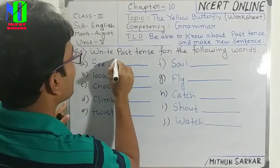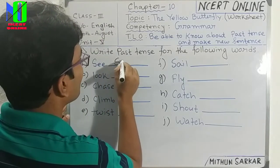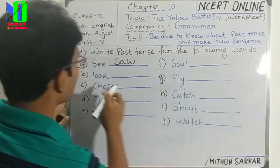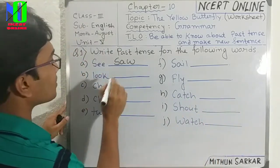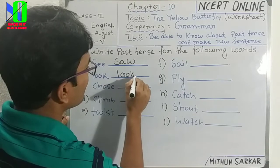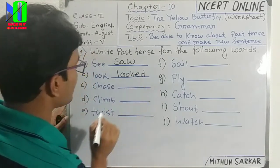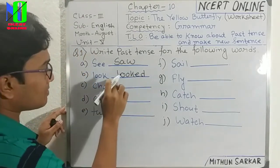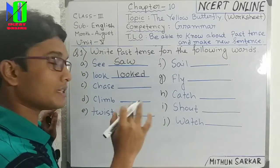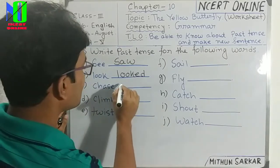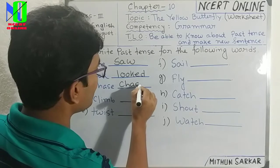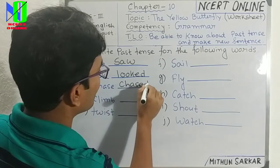When it is past form, 'see' becomes 'saw.' Then 'look' becomes 'looked' — you need to add 'ed.' Maximum words are like this, but some words are different. Then 'says' becomes 'said.'